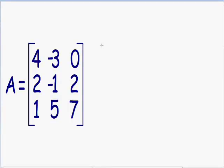Here we have matrix A, which is a 3 by 3 matrix, and we need to find the determinant of this matrix A. There are a couple of ways to find the determinant of a 3 by 3 matrix, but what I like to do is copy the first two columns and place them to the right of the matrix. So that's what I'm going to do right now.